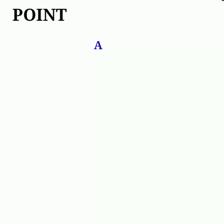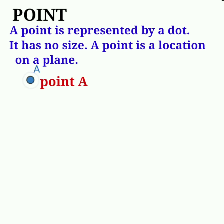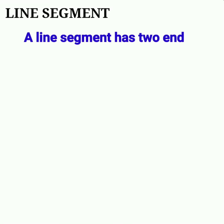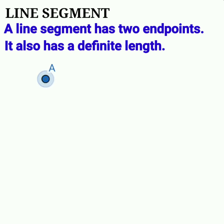A point is represented by a dot. It has no size; a point is a location on a plane. Examples: point A, point B, point C.